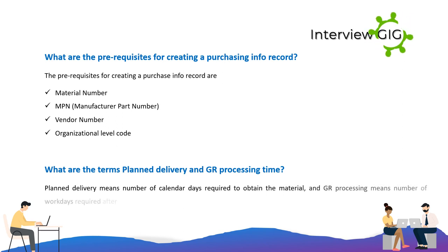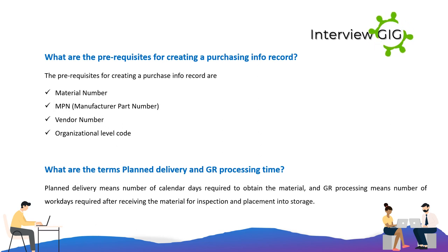What are the terms planned delivery and GR processing time? Planned delivery means the number of calendar days required to obtain the material. GR processing means the number of work days required after receiving the material for inspection and placement into storage.